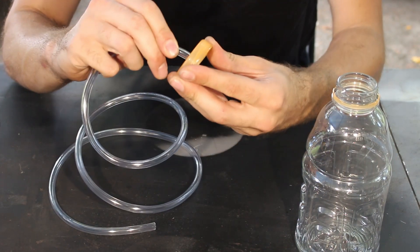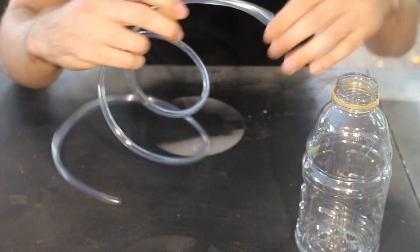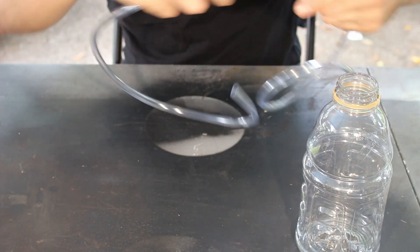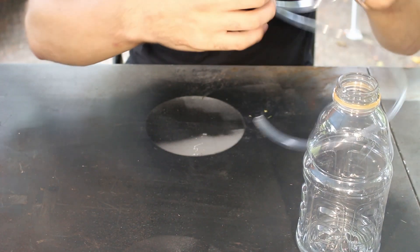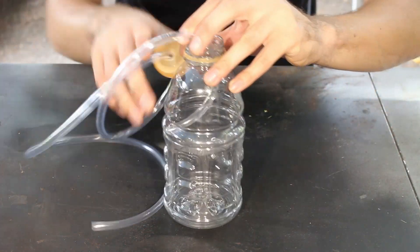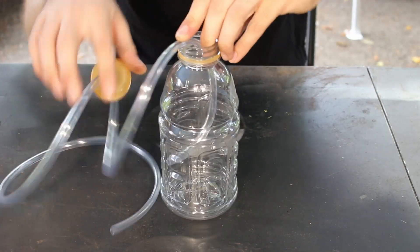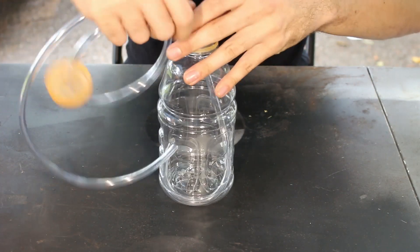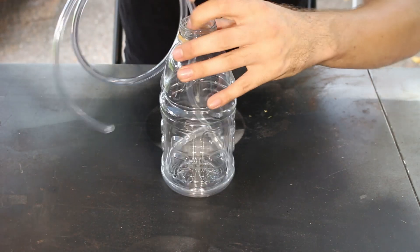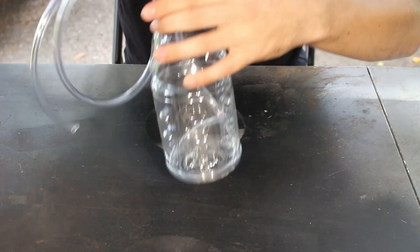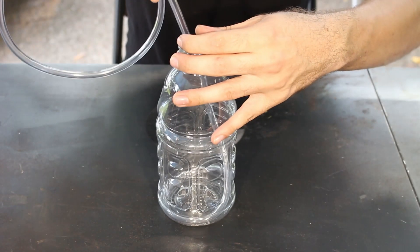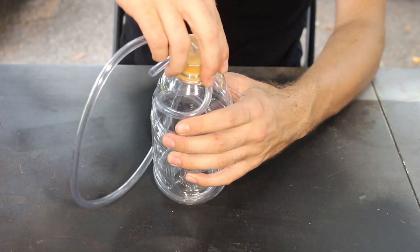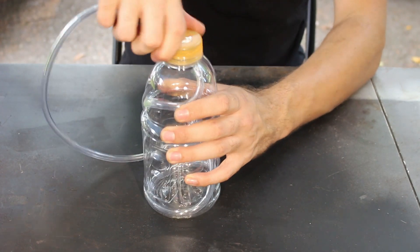So then just push the hose through the cap until you have as much through there as you want, and then stick it down into the bottle. As you can see I'm making sure it coils down in the bottom of the bottle, and then screw on the cap.